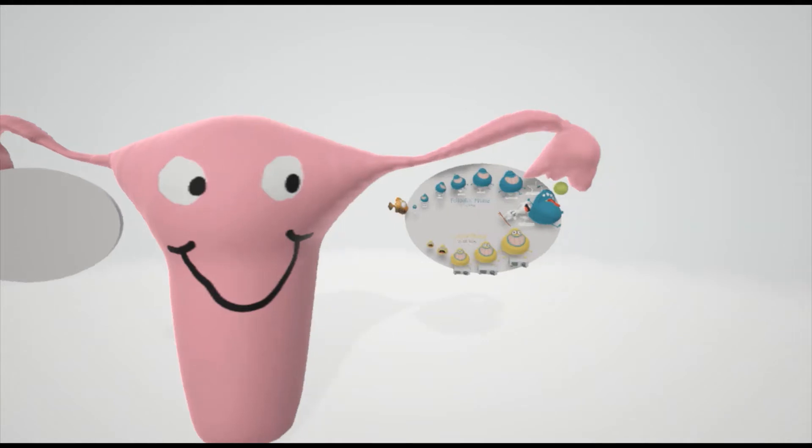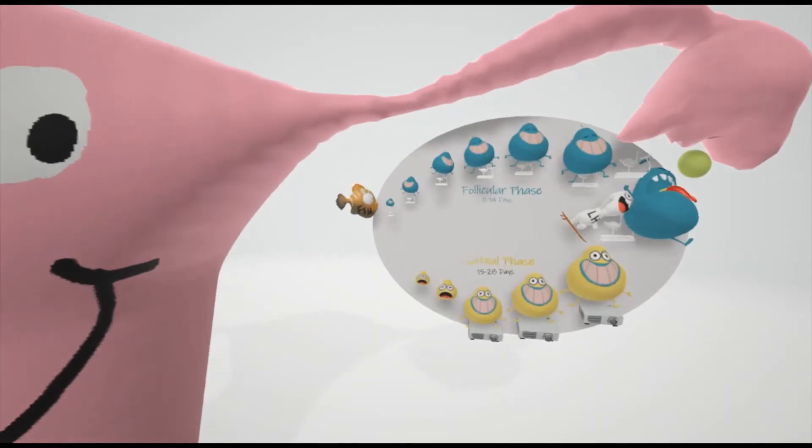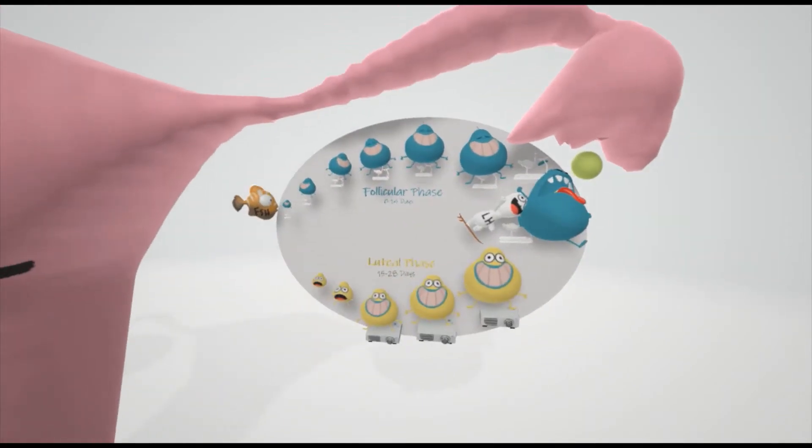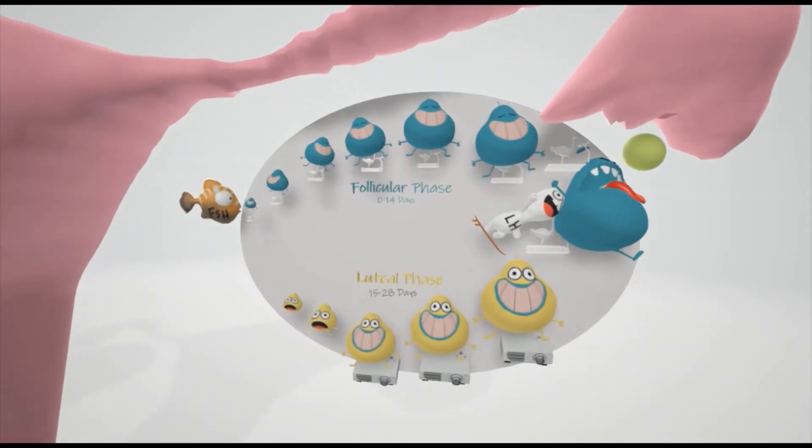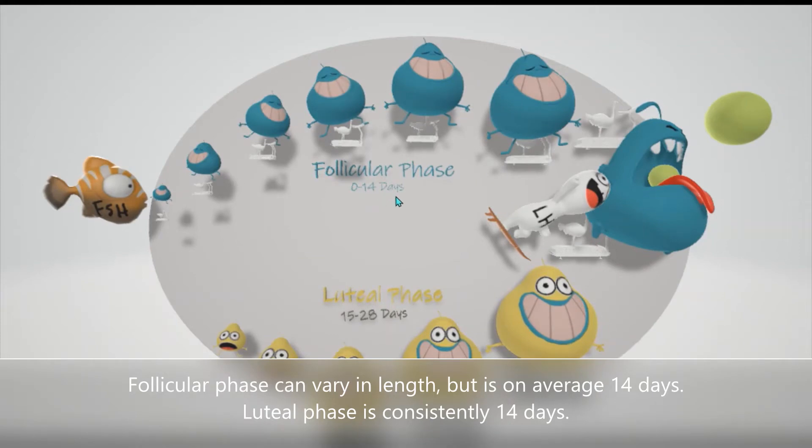Now let's go to the ovary, cross-section of the ovary, and let's take a look at what's going on in the menstrual cycle. Let's zoom in and take a look at the two phases of the menstrual cycle: the follicular phase and the luteal phase. The follicular phase is on average the first 0 to 14 days of the cycle, although that can vary.